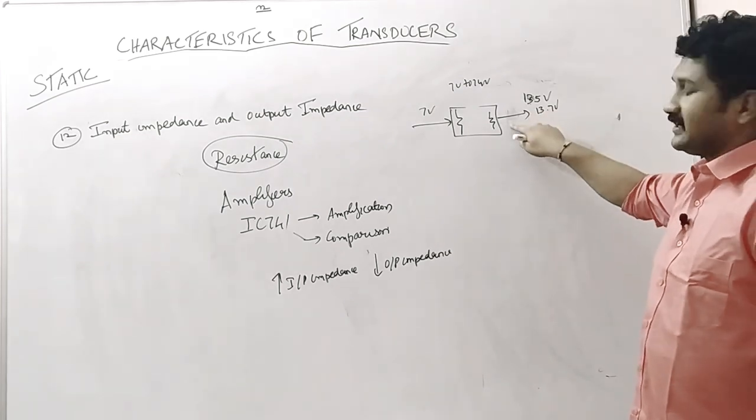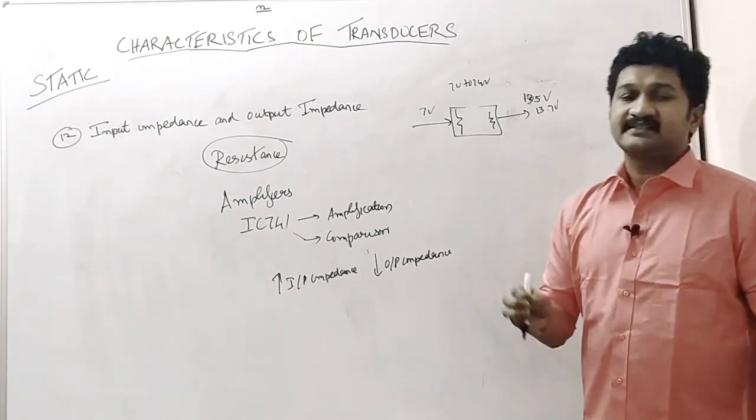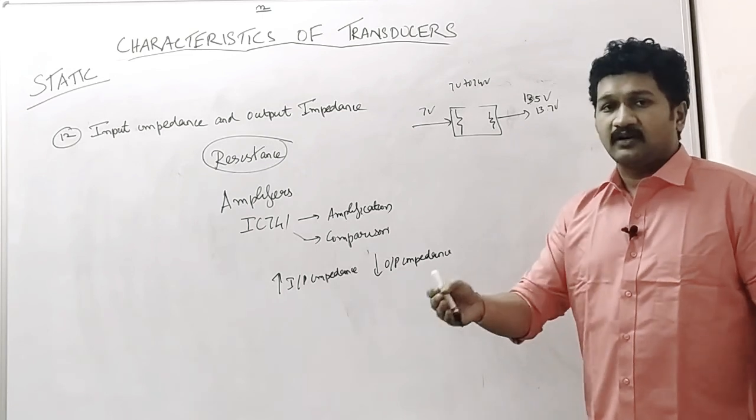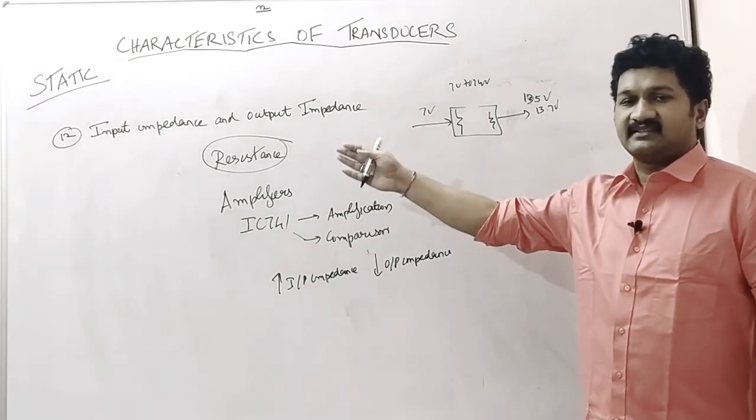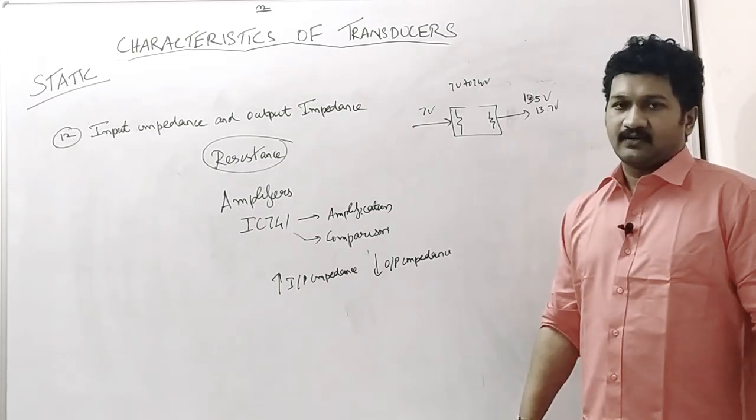So output impedance has to be low. This is one of the simplest analogies for explaining the input and output impedance, the static characteristics of a transducer. Thank you.